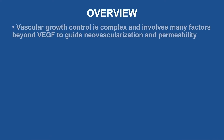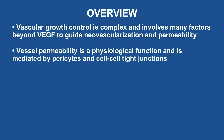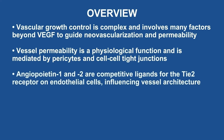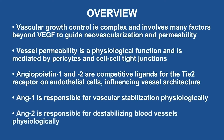From an overview perspective: first, vascular growth control is complex and involves many factors beyond VEGF to guide neovascularization and permeability. Second, vessel permeability is a physiological function mediated by pericytes and cell-to-cell tight junctions. Third, angiopoietin 1 and angiopoietin 2 are competitive ligands for the TIE2 receptor on endothelial cells, influencing vessel architecture. Fourth, angiopoietin 1 is responsible for vascular stabilization physiologically, and finally, angiopoietin 2 is responsible for destabilizing blood vessels physiologically.